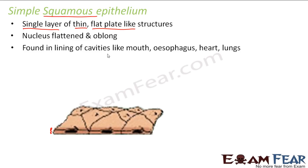Simple squamous epithelium is found in the lining of cavities like the mouth, esophagus, heart, and lungs. Now the question is: why are these thin flat structures found in such locations? If you look at these places — whether it is the mouth, esophagus, heart, or lungs — at all these locations, transport of substances takes place through a selectively permeable membrane. These thin and flat structures are helpful in transportation of substances.